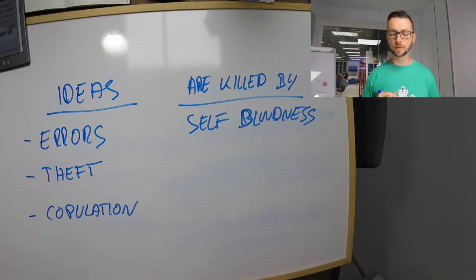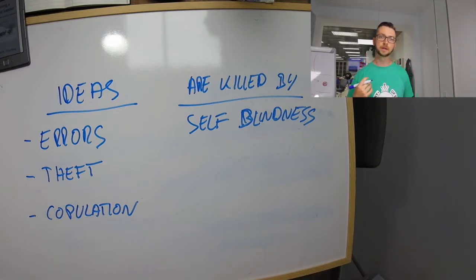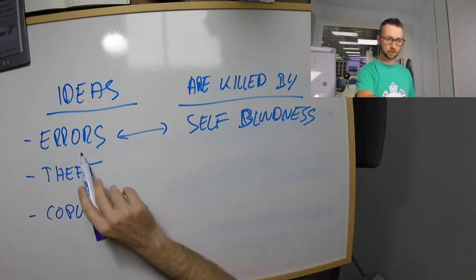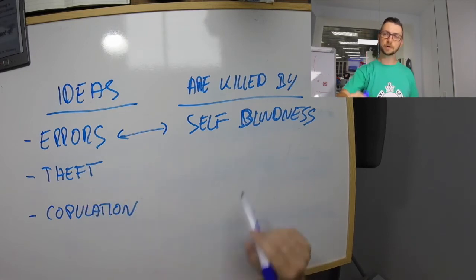Self-blindness is the first one. If you fail to see yourself, if you fail to understand how others are seeing you, what are you doing, then it's going to be very difficult that you can learn something out of the things you do and the errors you make. You see, those two are correlated. You are never going to learn from your errors if you are not able to understand first that you did an error.